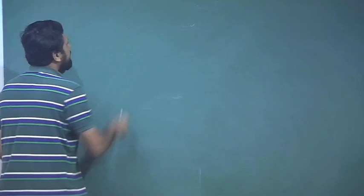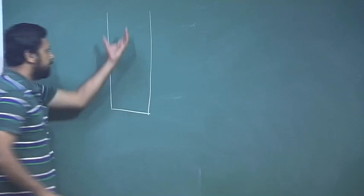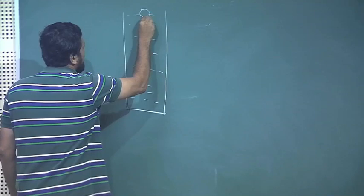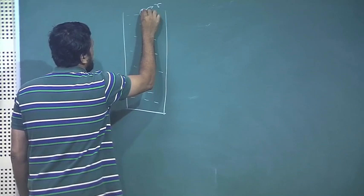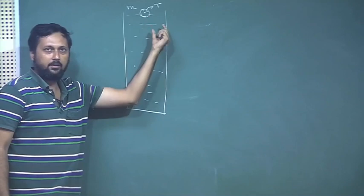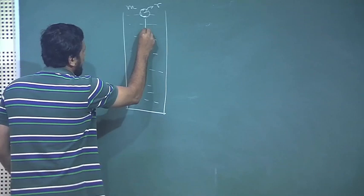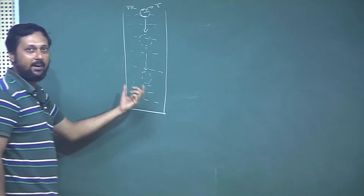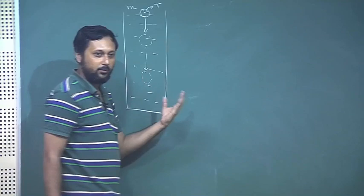Let us assume there is a column of viscous liquid. We drop a small metallic sphere of mass m and radius r into this column of liquid. As it starts falling through, because of the viscous drag present, it essentially attains a terminal velocity.